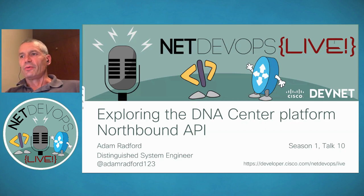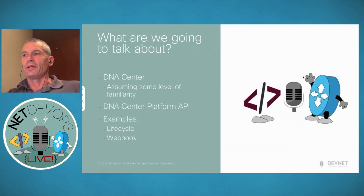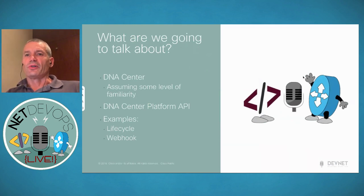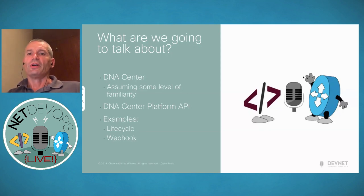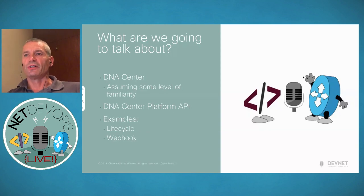The purpose of today is to cover a little bit about DNA Center. I'm going to assume that people tuning in have some familiarity, so this is not going to be a DNA Center 101. DNA Center is the controller Cisco has been working on for the campus and WAN devices — wired and wireless in a campus context. I really want to talk about the APIs, and the approach I've taken is a lifecycle approach: day zero onboarding, day one configuration change, day two assurance, and day N optimization.